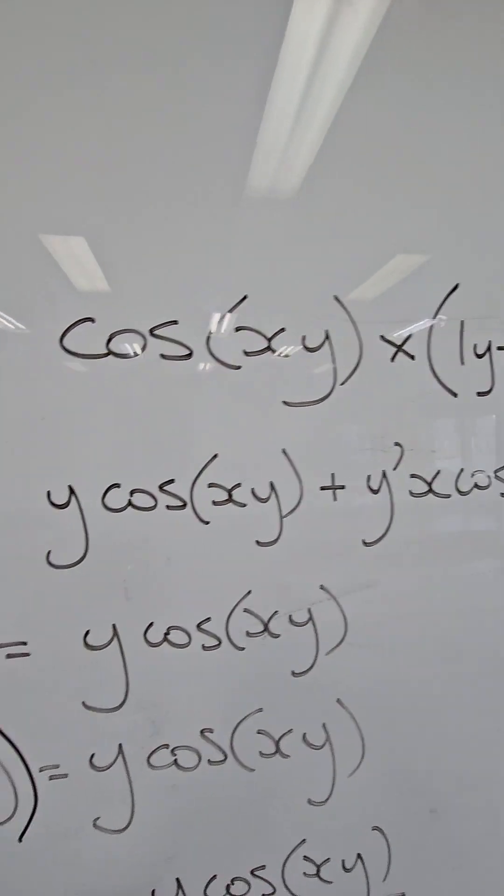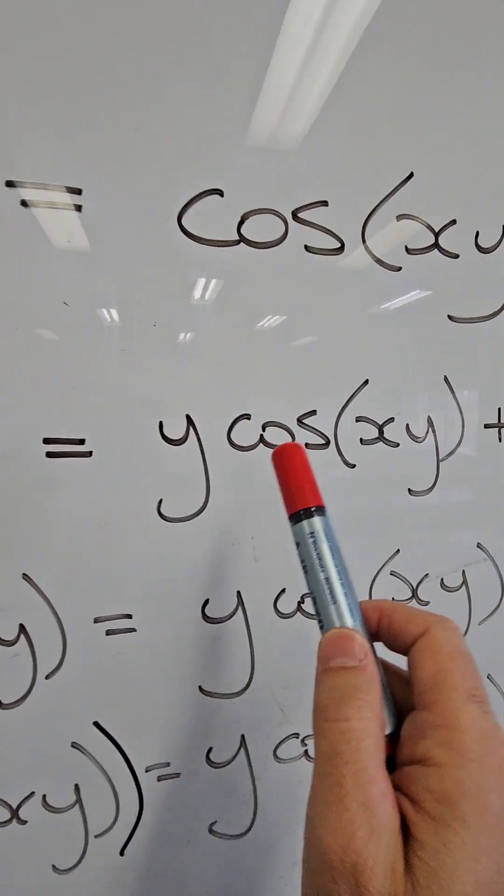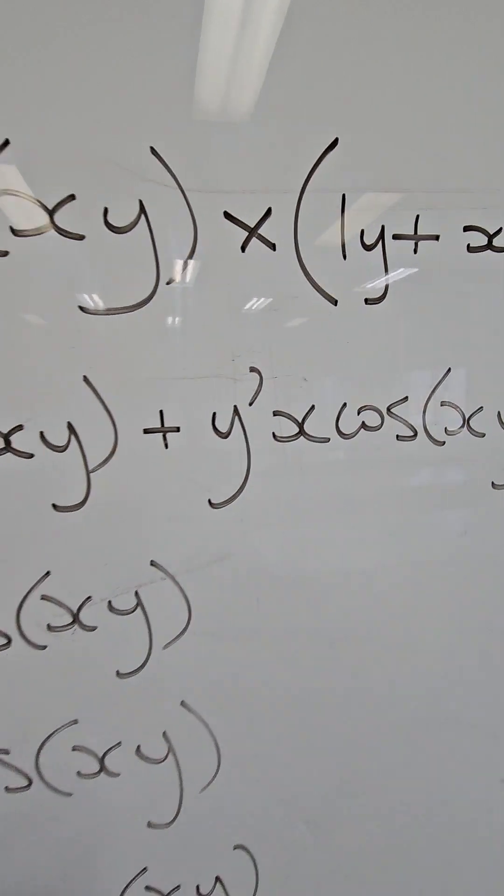Expanding the brackets on the right hand side we get y cos xy plus y dash x cos xy.